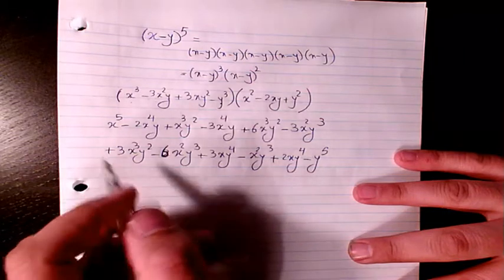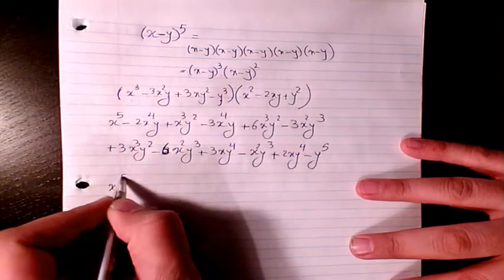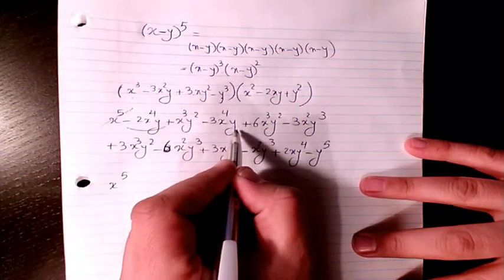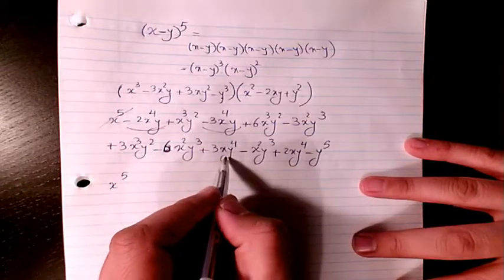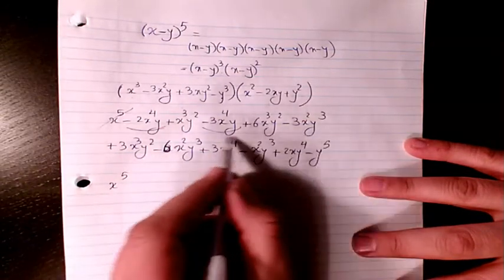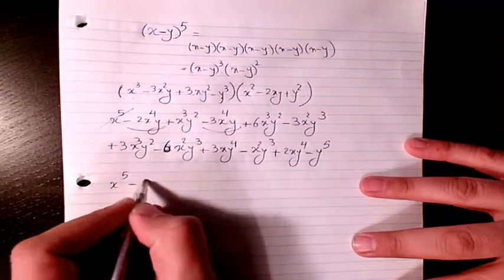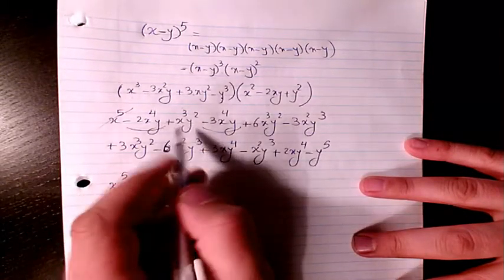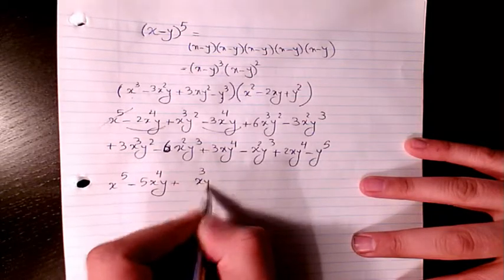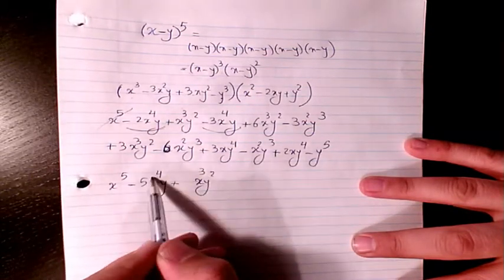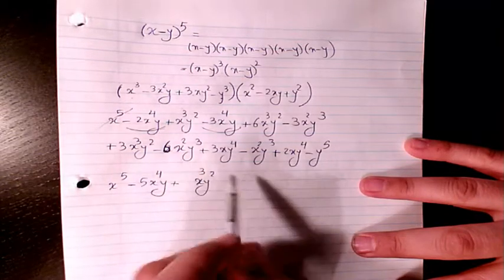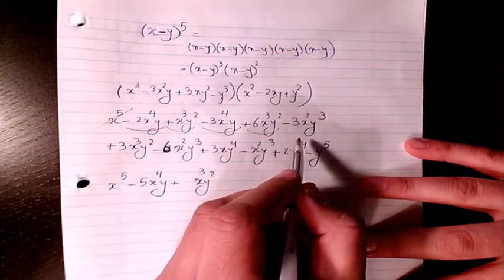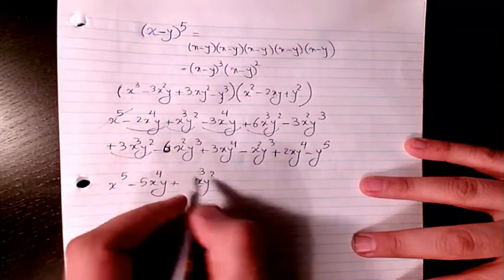Now let's organize them. We have x to the power of 5. Then for x to the power of 4 y terms: we have negative 2 and negative 3, giving negative 5x to the power of 4 y. Then for x cubed y squared terms: the exponent of x is reducing and the exponent of y is increasing. We have 1, 6, and 3 here, so that gives 10x cubed y squared.